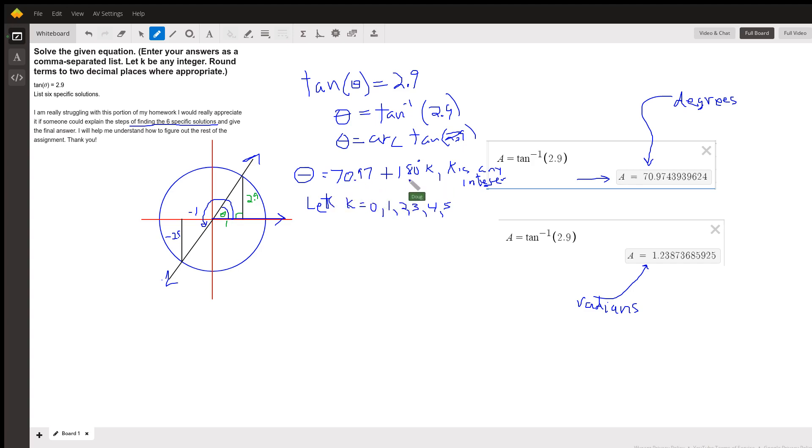You could also let k equal 0, 1, 2, negative 1, negative 2, and maybe negative 3, and then compile your list of angles that have a tangent of 2.9. But again, this is how you would represent infinitely many solutions of that equation.